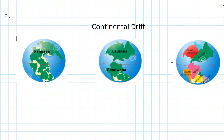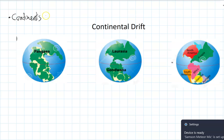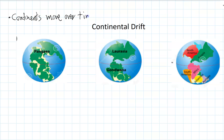Continental drift is basically the process that continents move over time. It happens really slowly — just a few centimetres each year. We can actually measure Australia moving at the moment using satellites, and Australia is moving north towards the equator at about two centimetres every year.